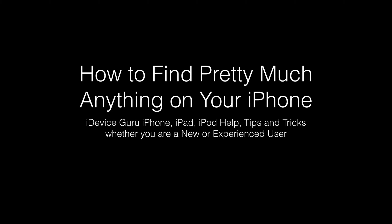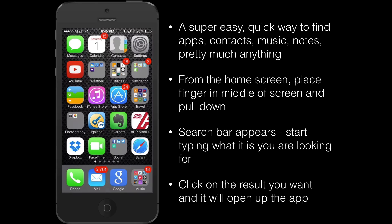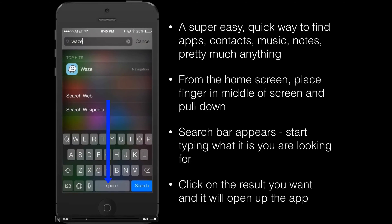With this video I'm going to show you how to find pretty much anything on your iPhone. With iOS 7, Apple introduced a much simpler method of finding things with a Spotlight Search function. What you're going to do is place your finger on the middle of the screen and pull downwards, and what will appear is a search bar.